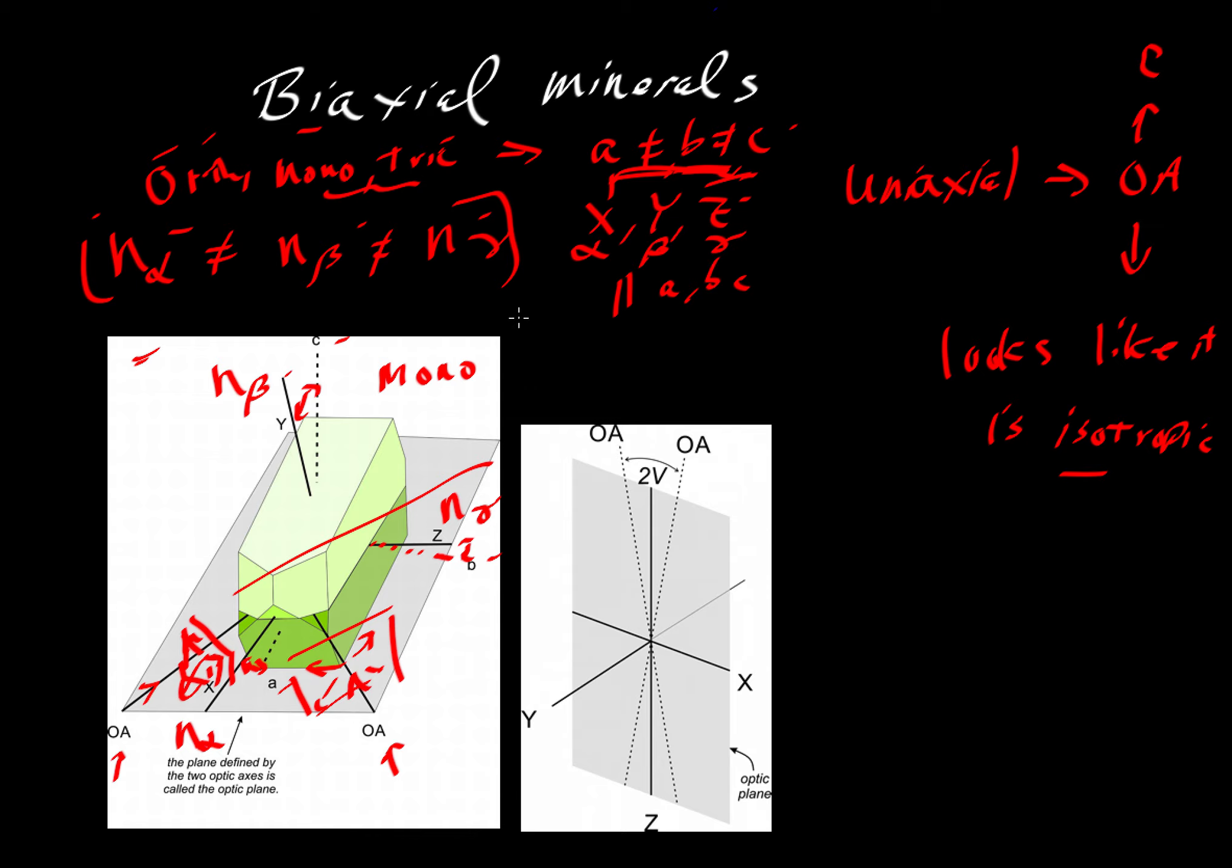Now, there's one final aspect for us to cover. If we have two optic axes instead of one, well, that first of all gives us our name here, biaxial. By biaxial, we mean that it has two optic axes, whereas the uniaxial mineral just had one. But it also means we could start thinking about the angle between those optic axes.